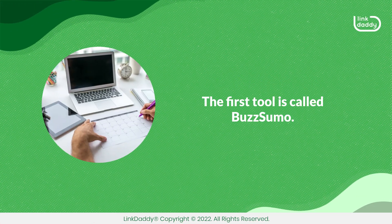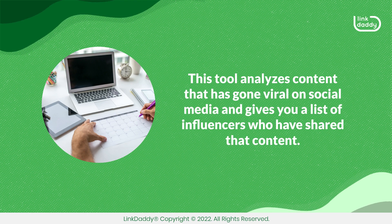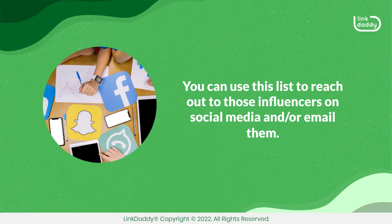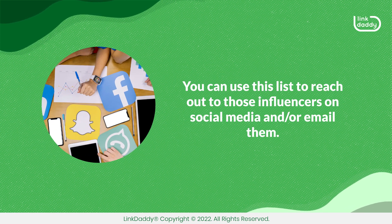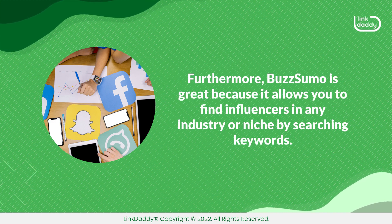The first tool is called Buzzsumo. This tool analyzes content that has gone viral on social media and gives you a list of influencers who have shared that content. You can use this list to reach out to those influencers on social media and or email them. Furthermore, Buzzsumo is great because it allows you to find influencers in any industry or niche by searching keywords.